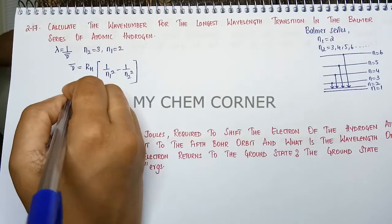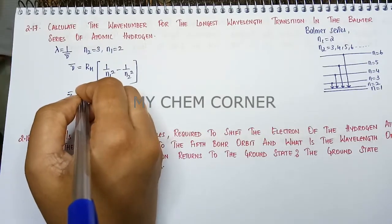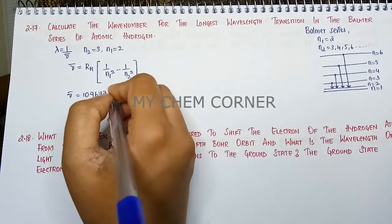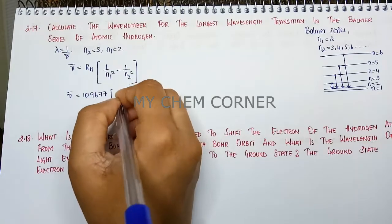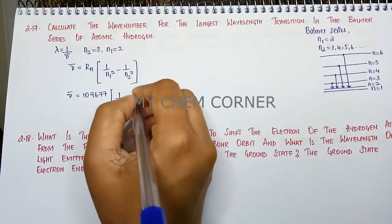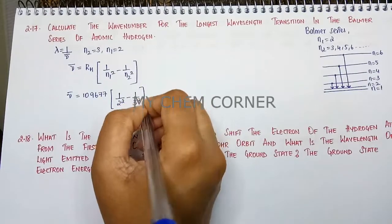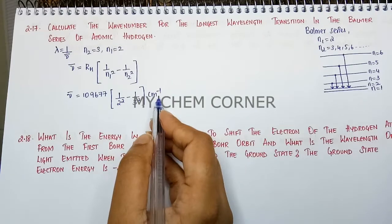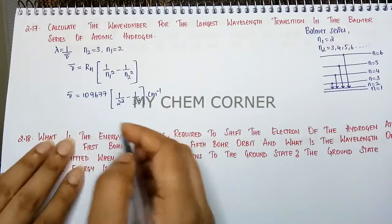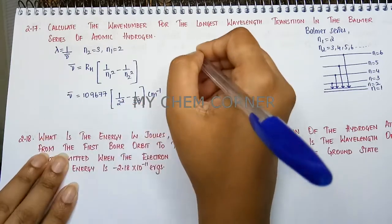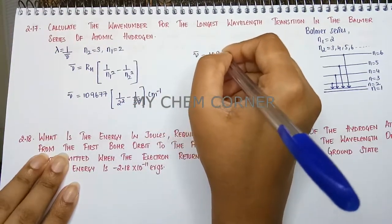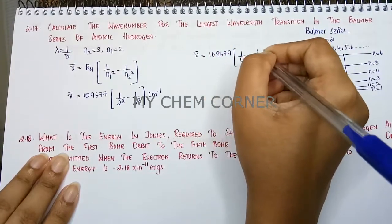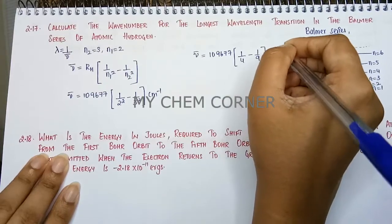So now nu bar equals the Rydberg's constant 109,677 into 1 by N1 square is 1 by 2 square minus 1 by N2 square is 3 square. Because it is nu bar which is the wave number, you write centimeter inverse. Now just simplify this value and you will get nu bar equals 109,677 into 1 by 4 minus 1 by 9 centimeter inverse.